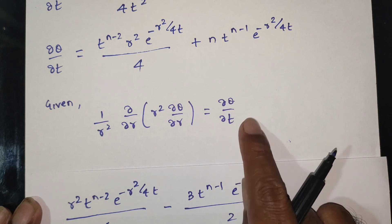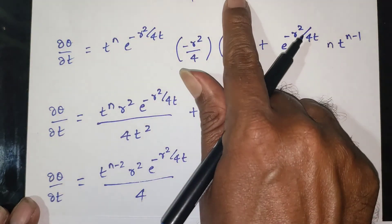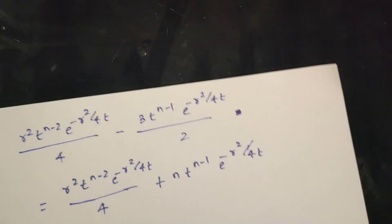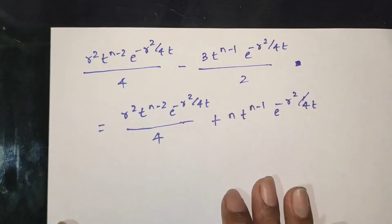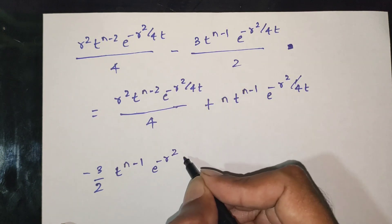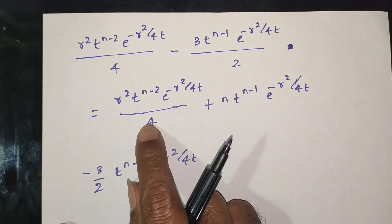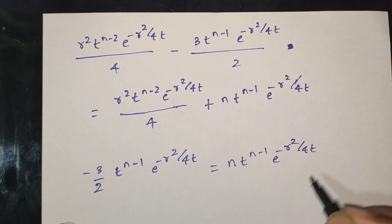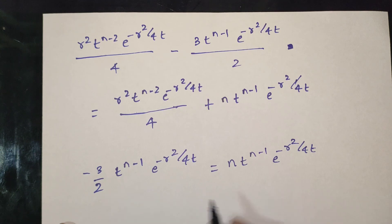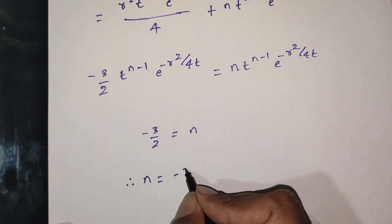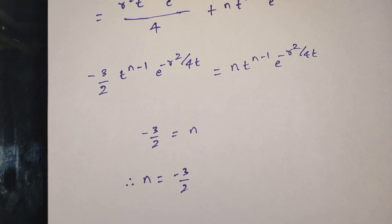Cancelling the common terms t^(n-2) · r² · e^(-r²/4t) / 4 from both sides, and also cancelling t^(n-1) · e^(-r²/4t), we get: -3/2 = n. Therefore, n is equal to -3/2.